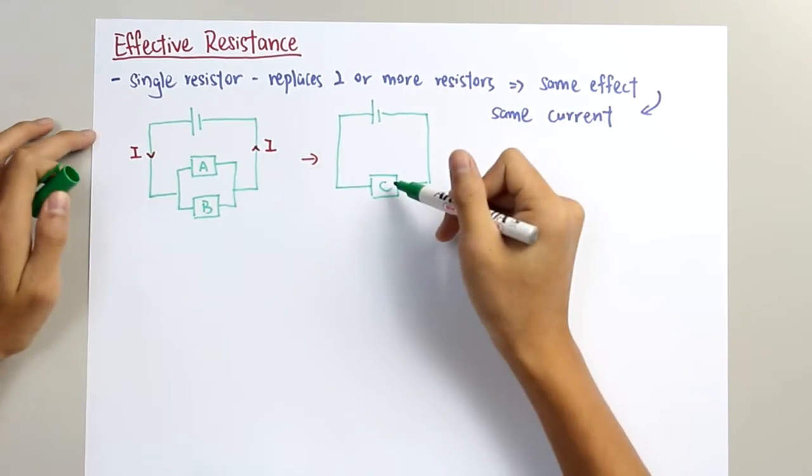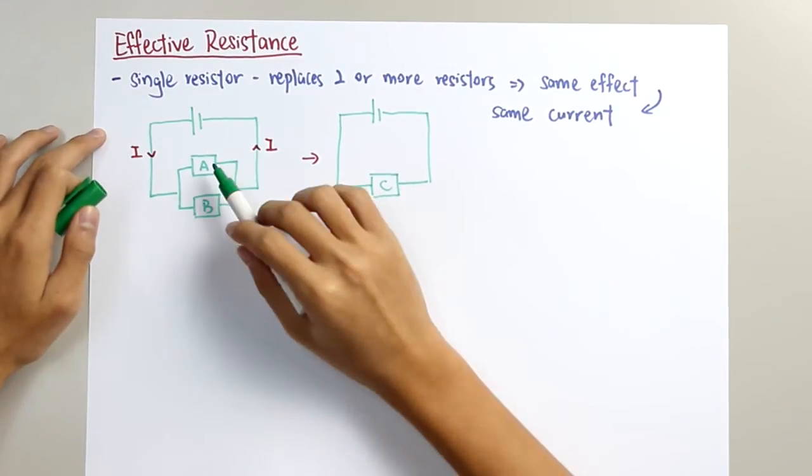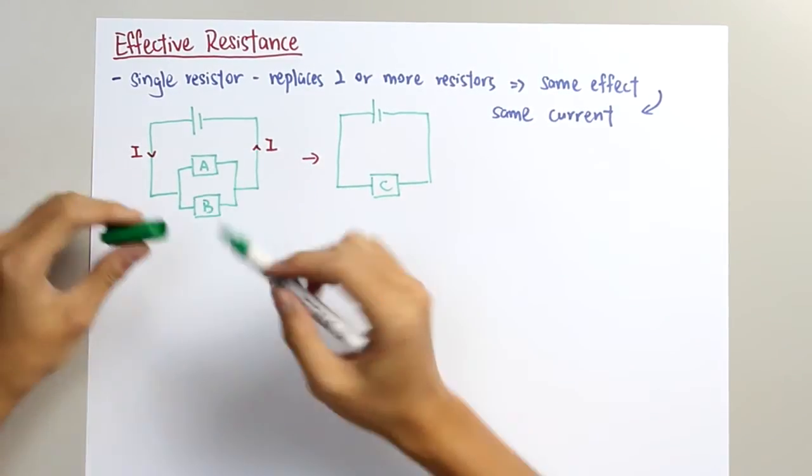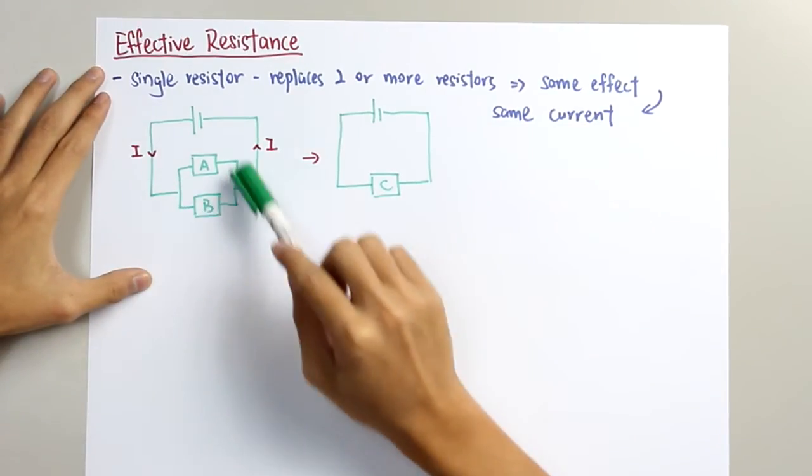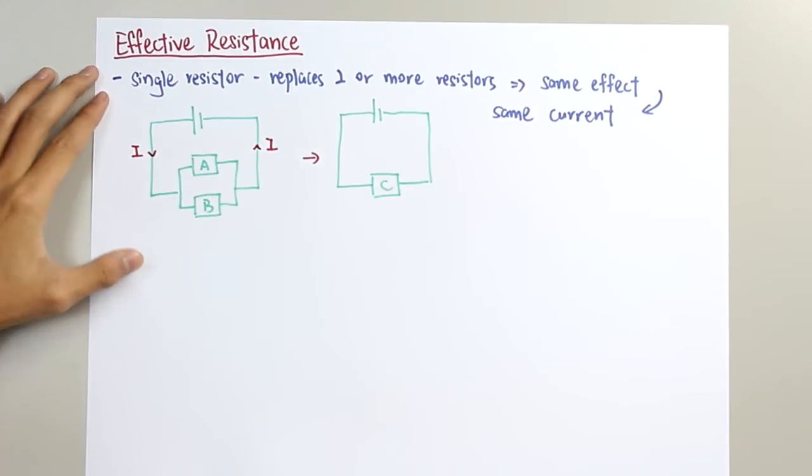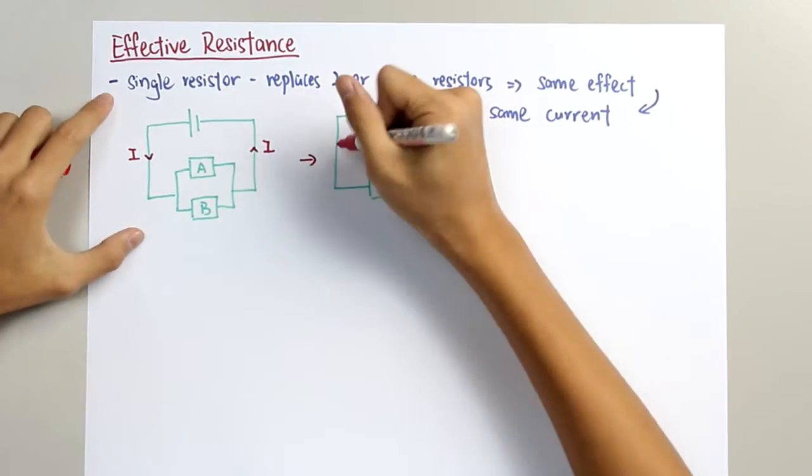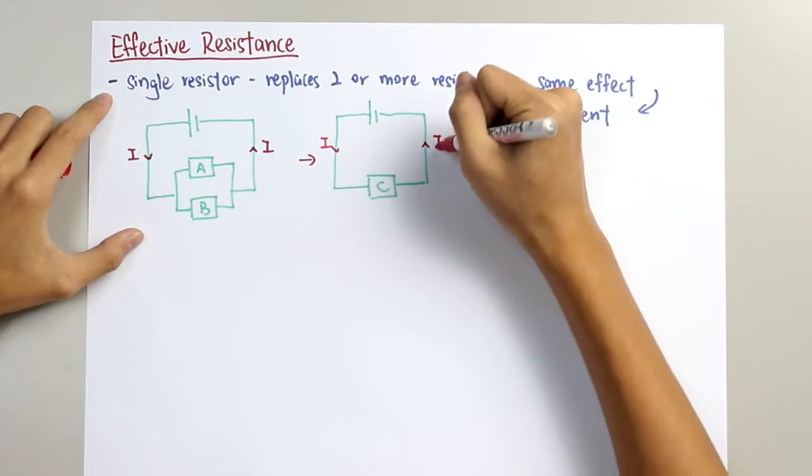A resistor C which represents the combination of two resistors A and B. This indicates the total resistance across here is the same as the resistance of C. And therefore, the current passes through it will still be I.